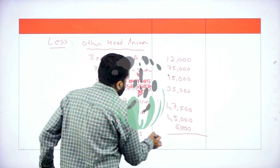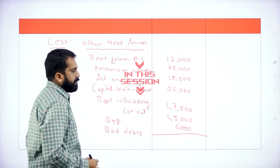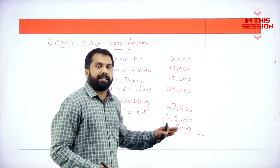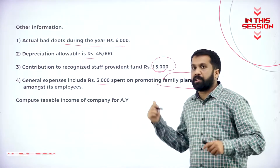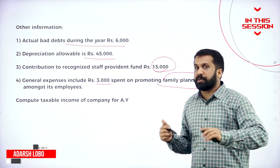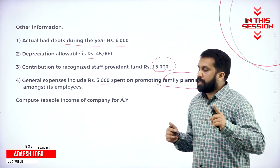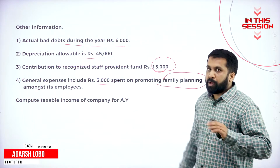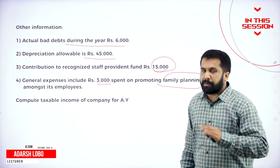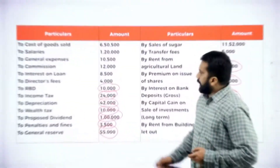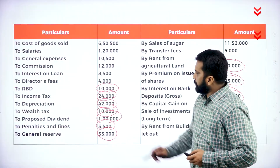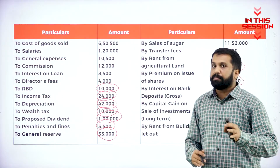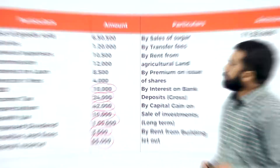Whatever comes under adjustment, every time it comes under other head items only. This will not come under disallowed. Remember, even though the 3,000 belongs to family planning, it will not come under disallowed. Add all the items, minus all the items. You are done with your business income.